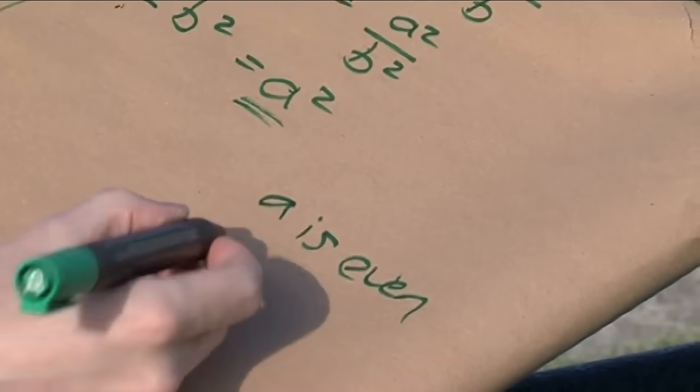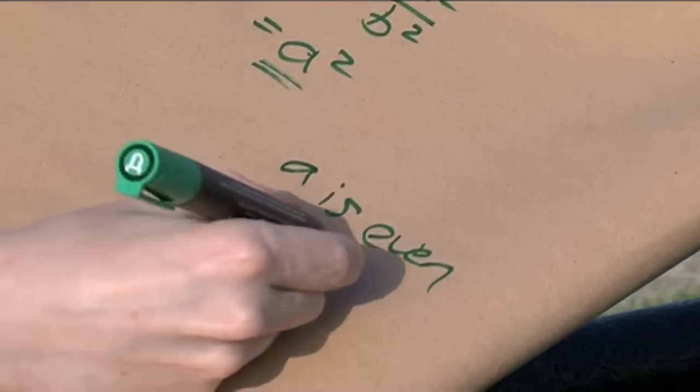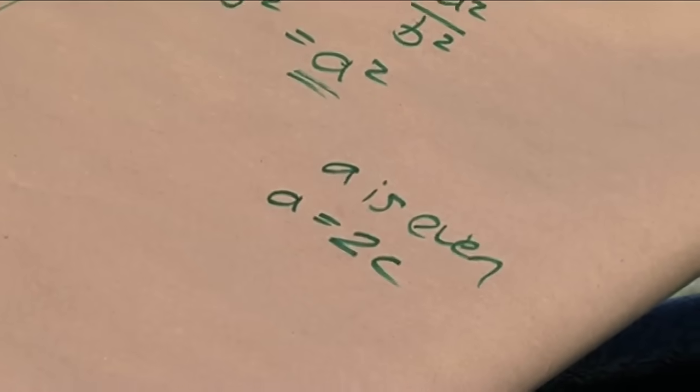So a is even. Let's call it something else. Let's call it a equals 2 times c. So what do we have now?